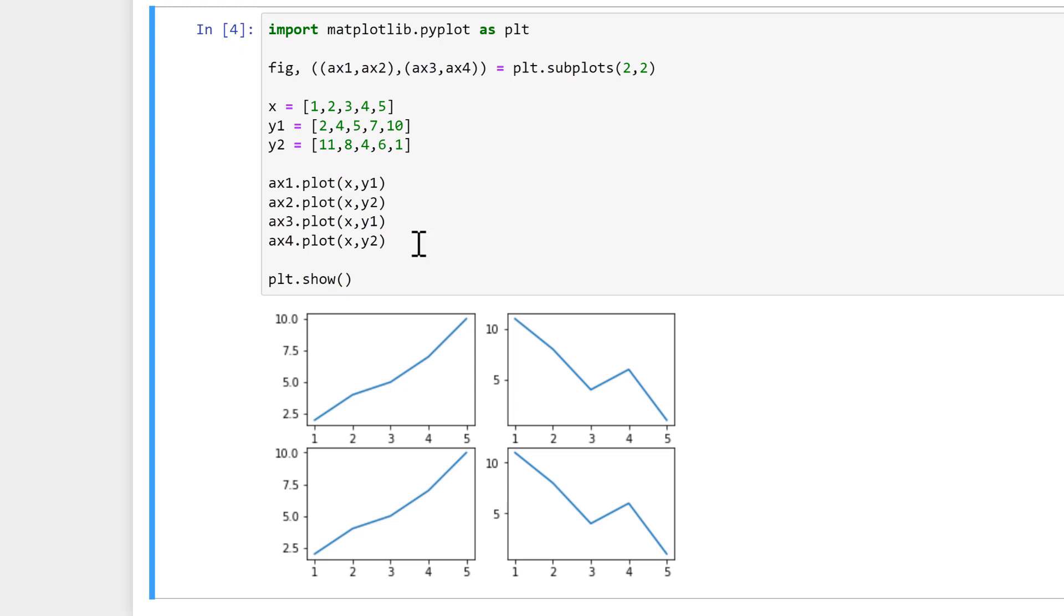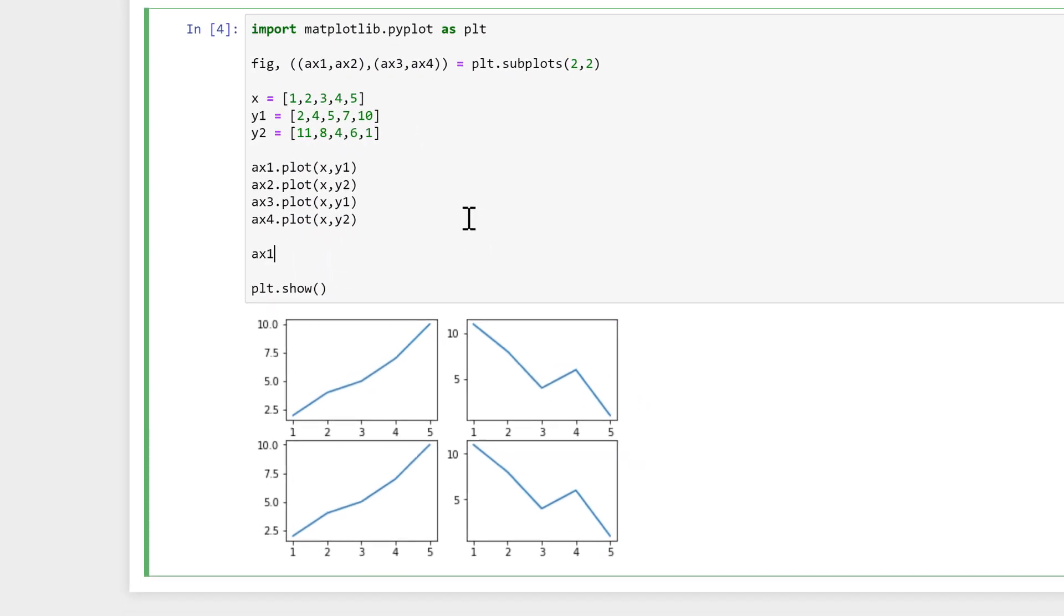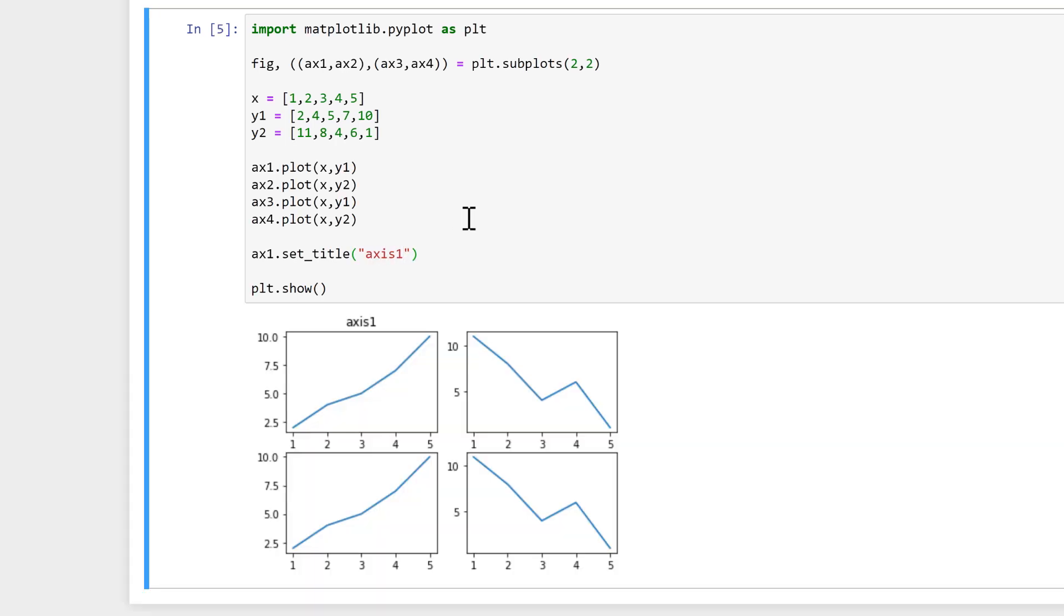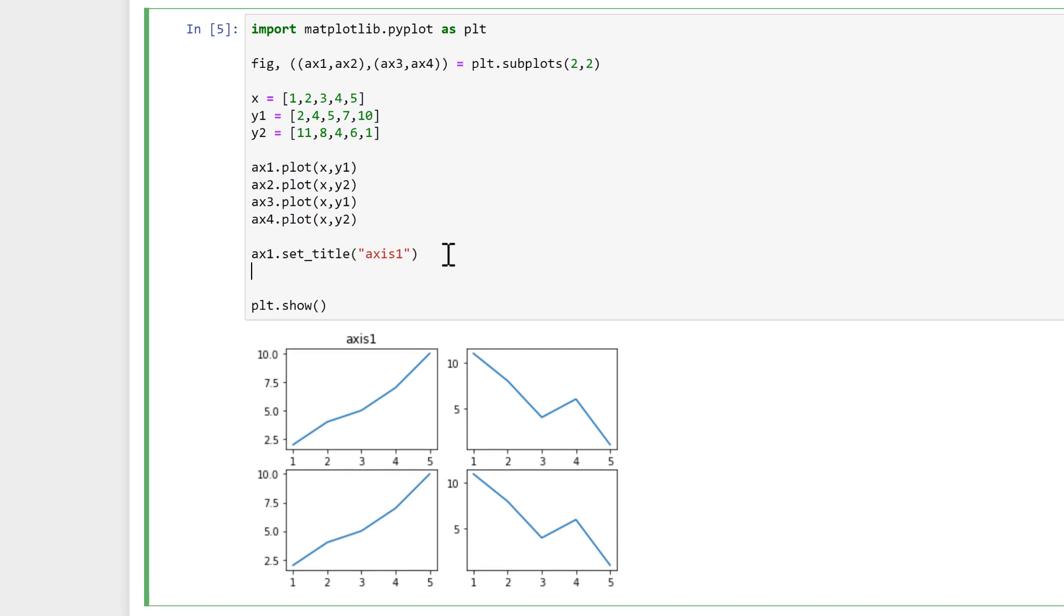And we now have four subplots. And I can give axes 1 a title by going set_title, and I will call this axes 1. And then I can also put a title for the whole thing.